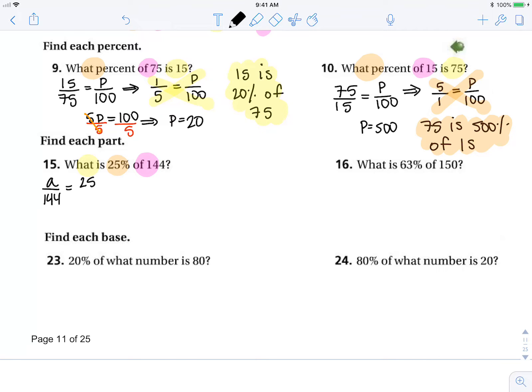Of equals percent out of 100. A over 144 equals 1 fourth. When I simplify, cross products are equal.